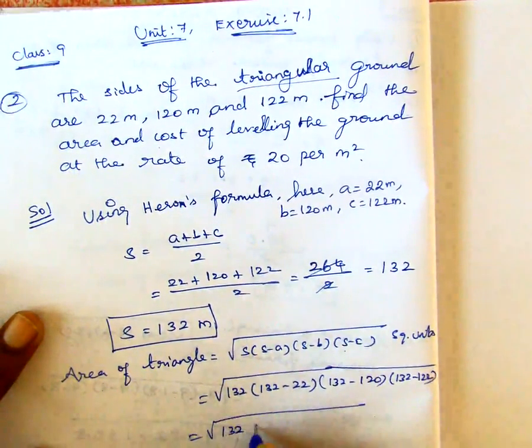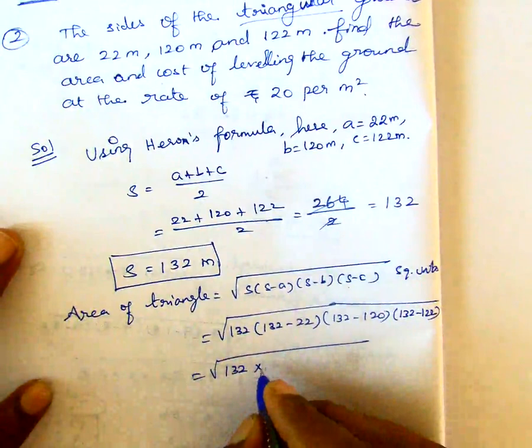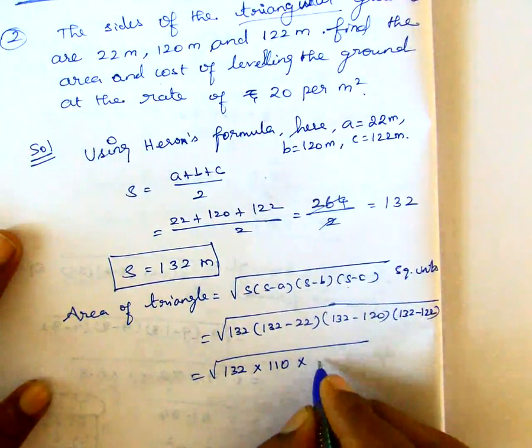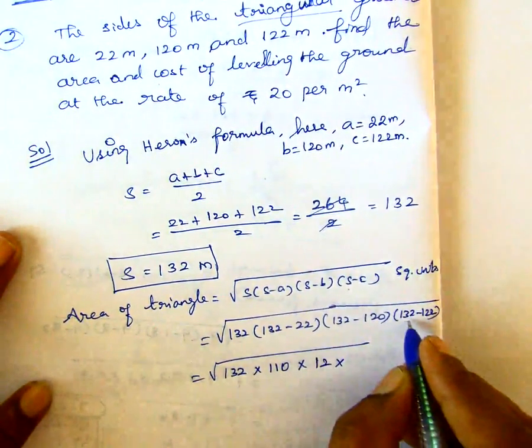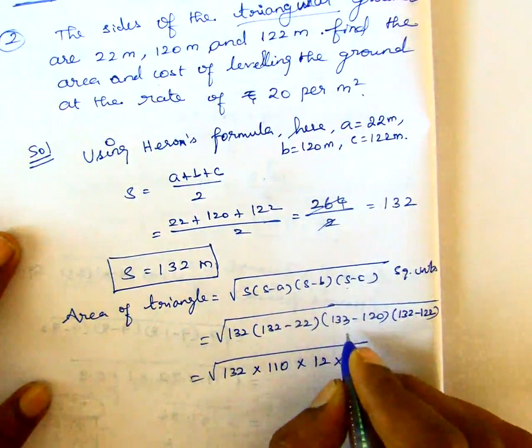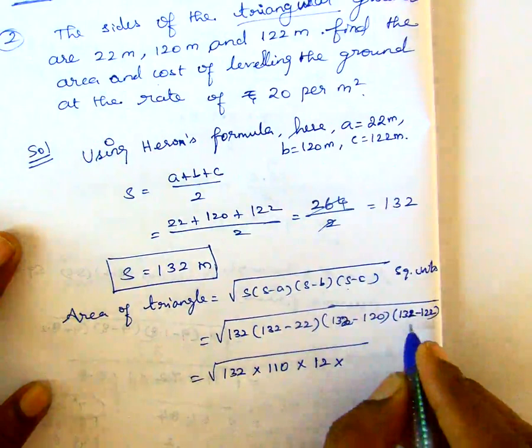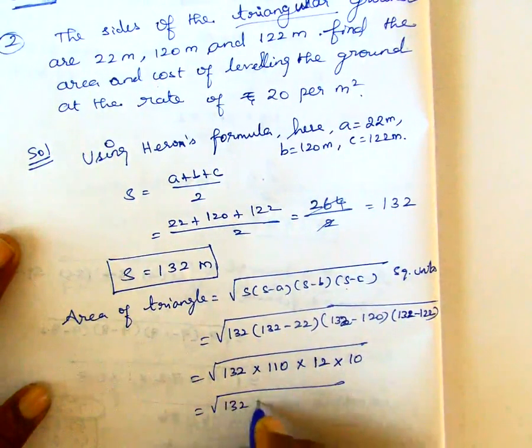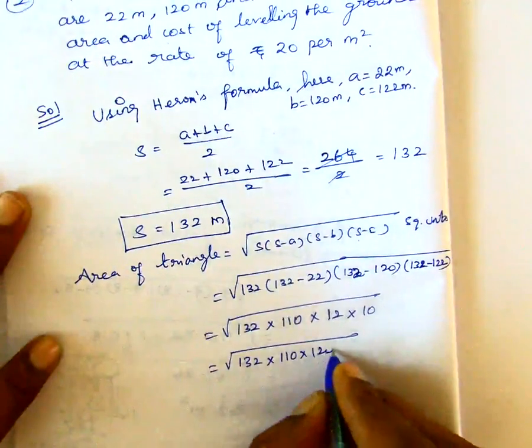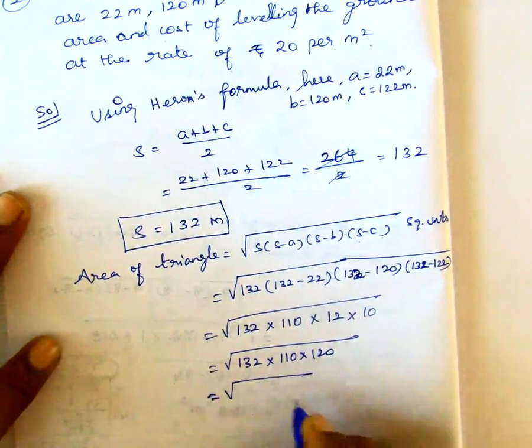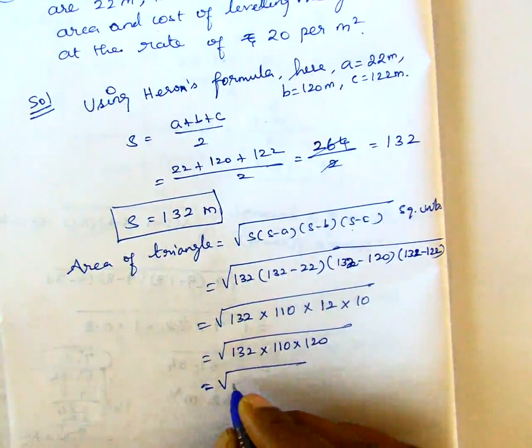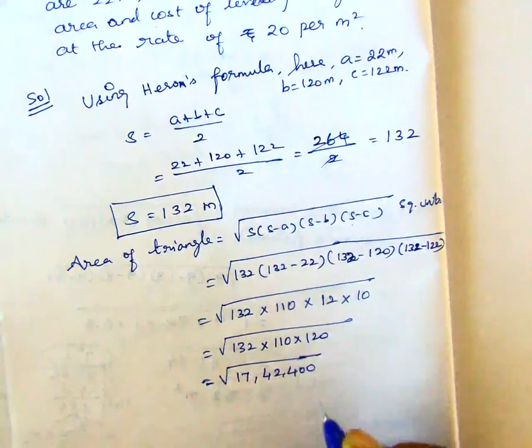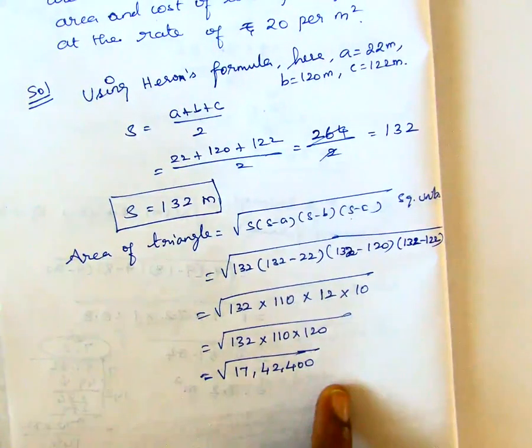So, this means 132 minus 22 is 110, and 132 minus 120 is 12, and 132 minus 122 is 10. So, if you multiply 132 times 110 times 12 times 10, you get 17,42,400. This value is under square root.